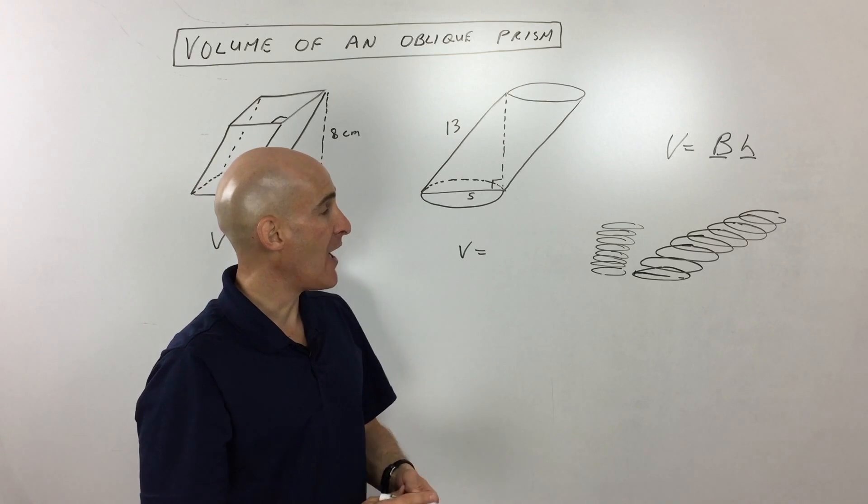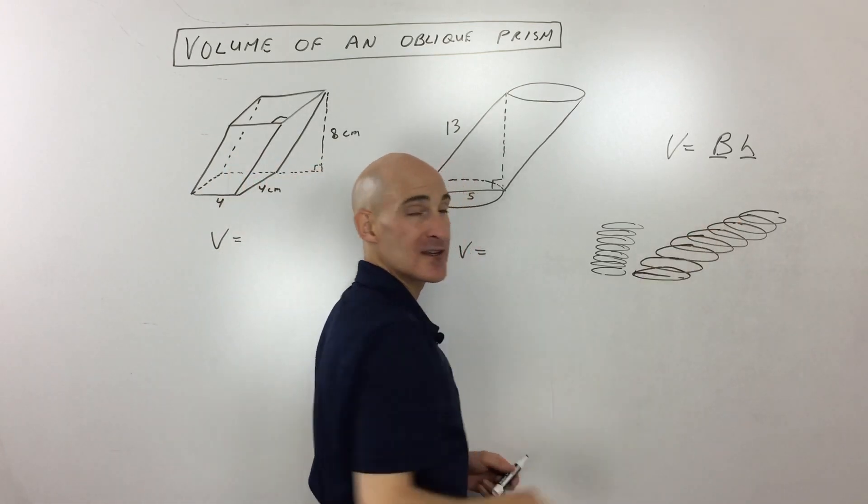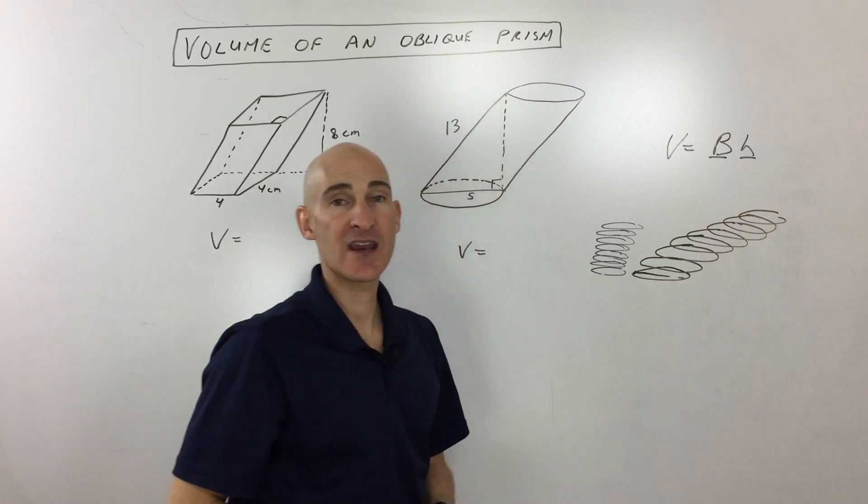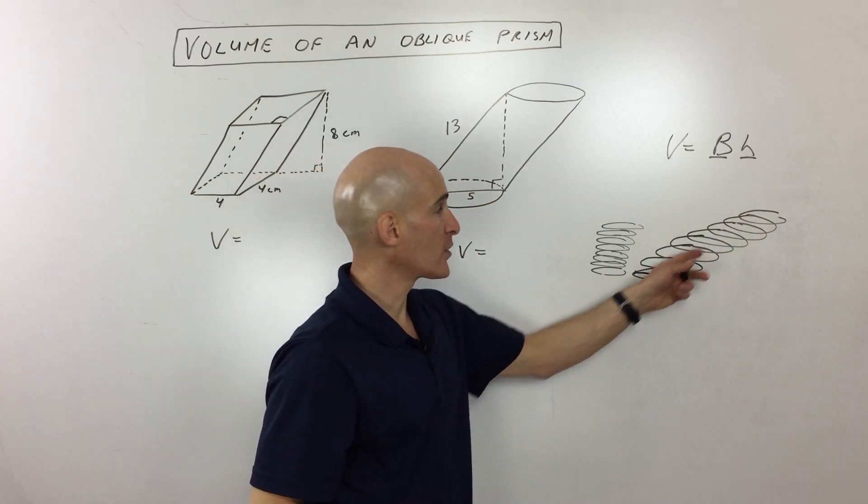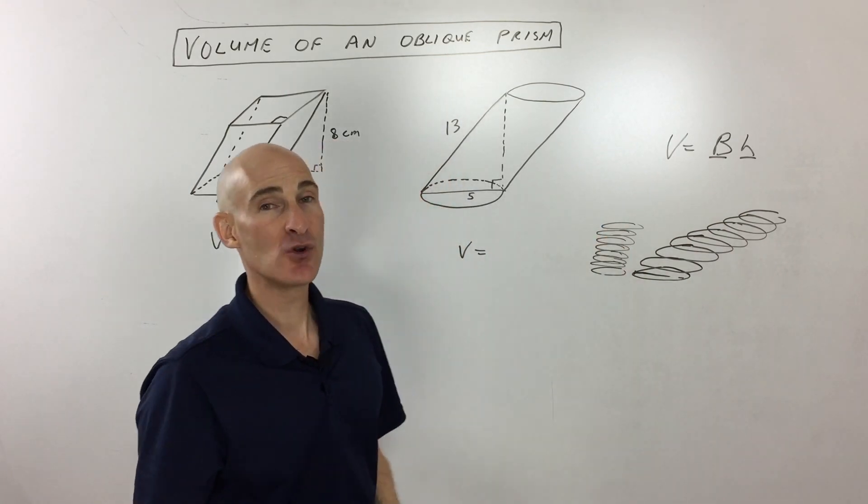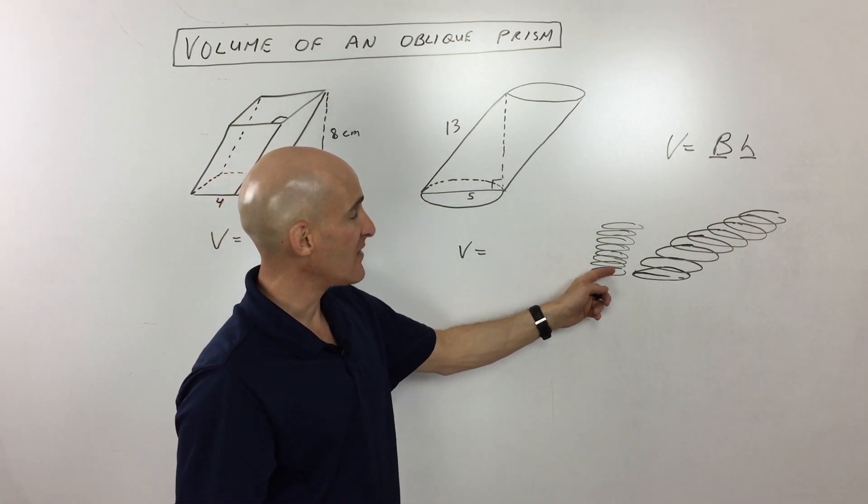So when you think about the volume, you know, the volume of each individual coin is the same. We're not stretching it or compressing it. So if we take the volume of all these coins added up, it's just going to be the volume of one coin times eight. So it's the same volume. So long story short,